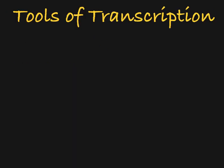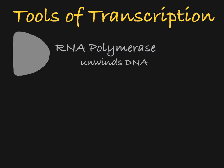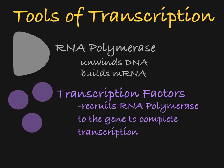So how do we build this mRNA transcript of a gene? We need to use a few types of proteins. RNA polymerase is the enzyme responsible for unwinding the DNA and building the mRNA. And proteins called transcription factors are responsible for promoting transcription of a gene by recruiting the RNA polymerase to that gene.